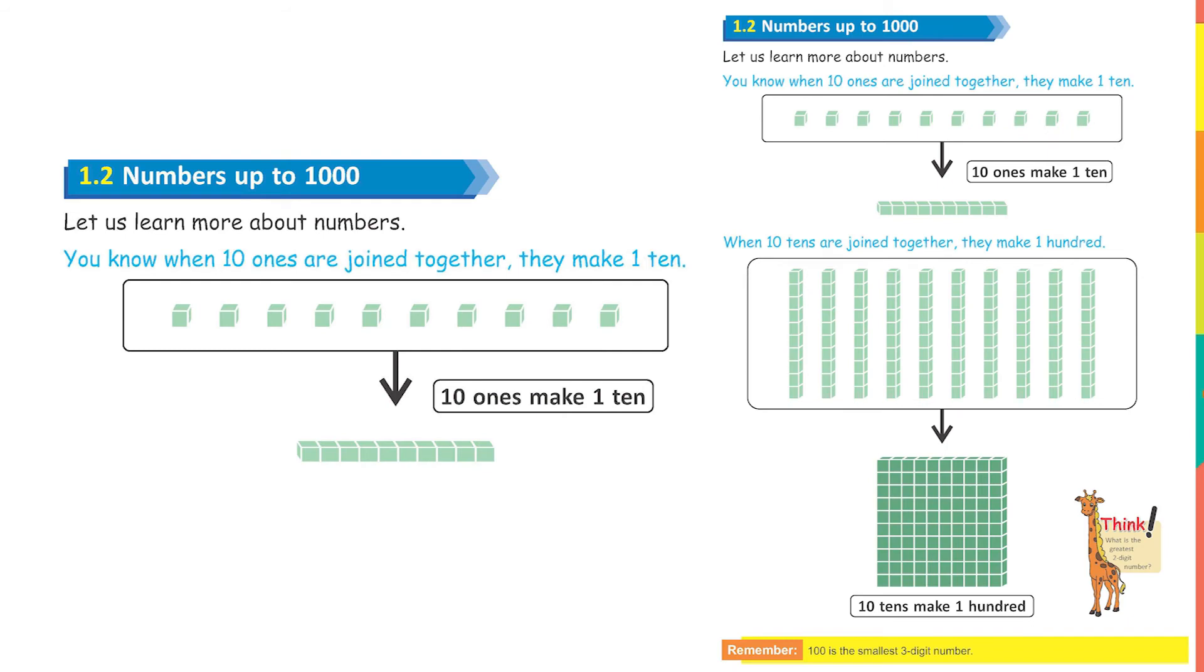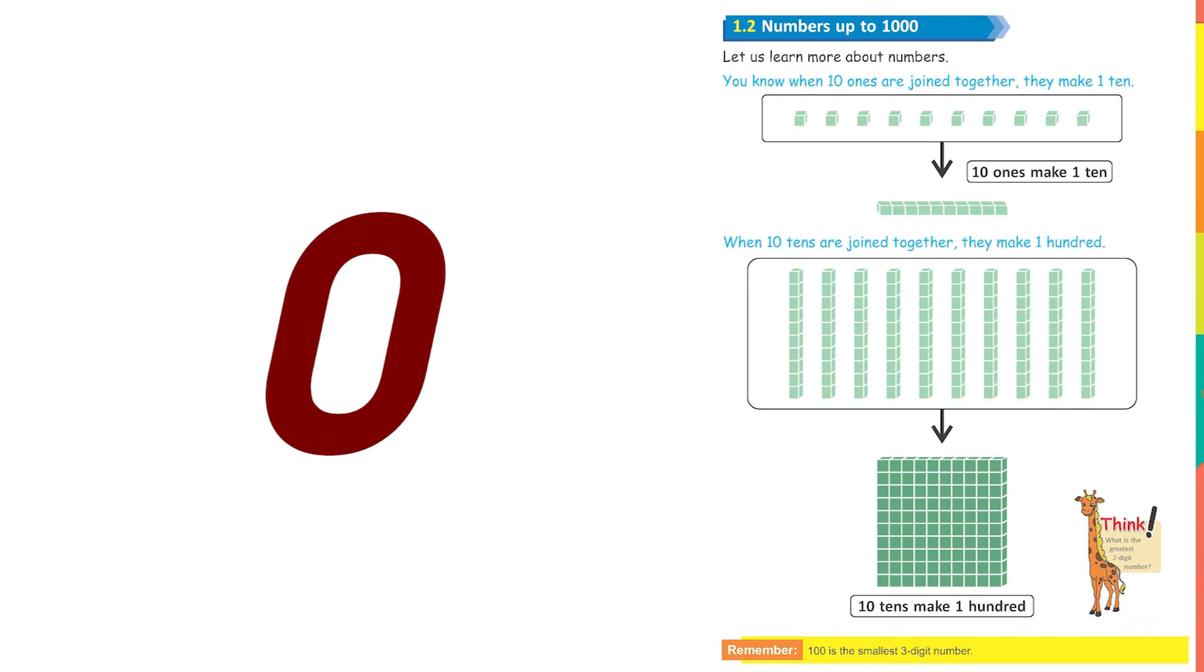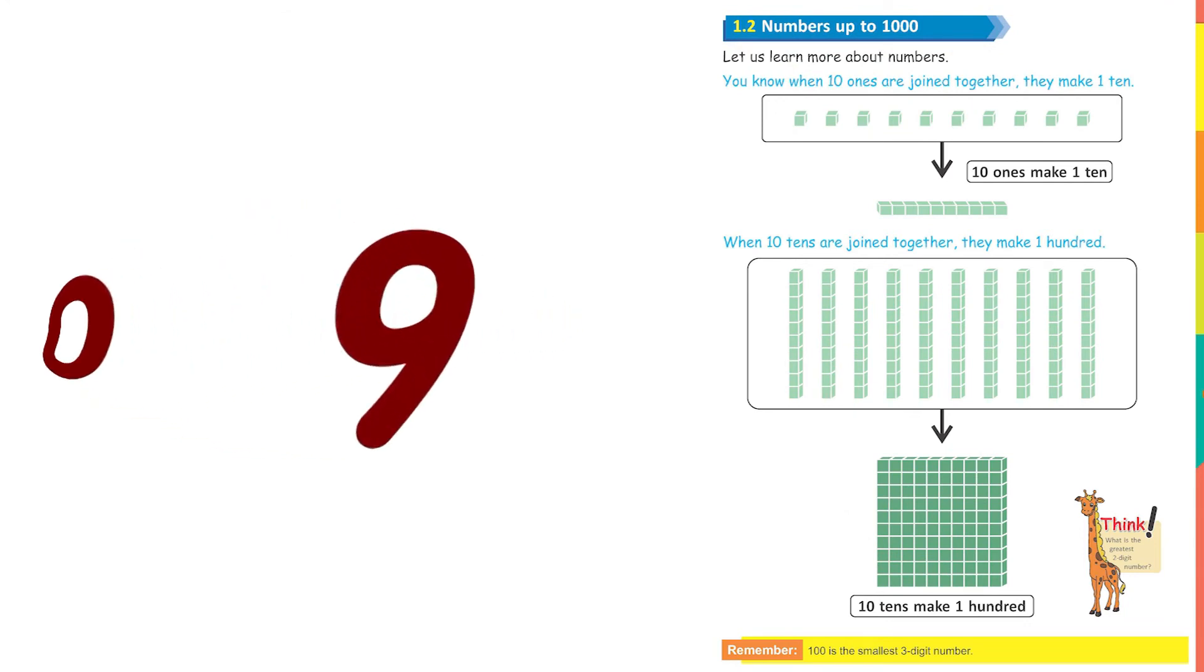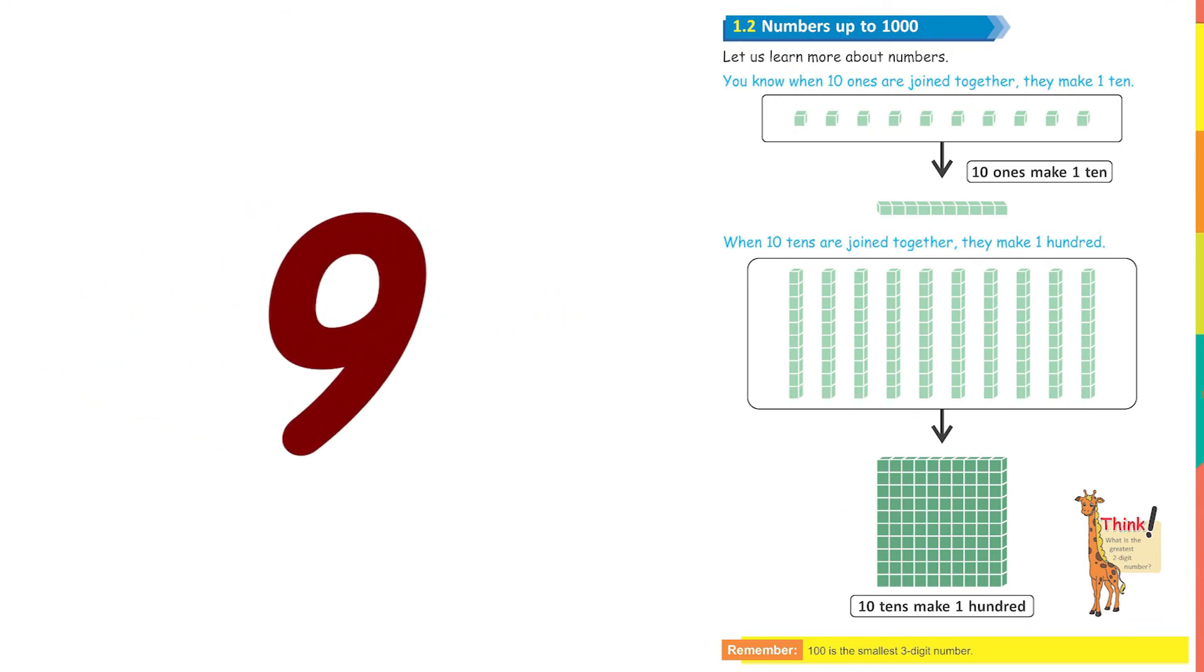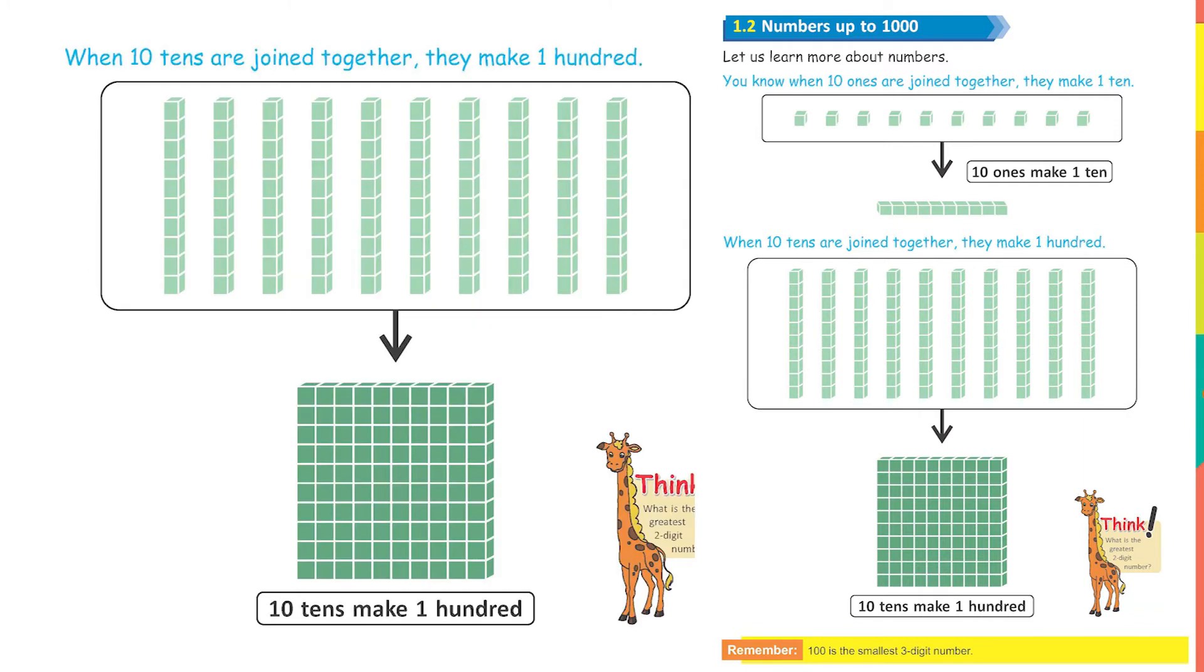Moving on to page 9, the objective is numbers up to 1000. In your previous class, we have done ones. The smallest number of ones is 0 and the highest number of ones is 9. Then if we put together 10 objects that makes 1 ten. That you very well know.